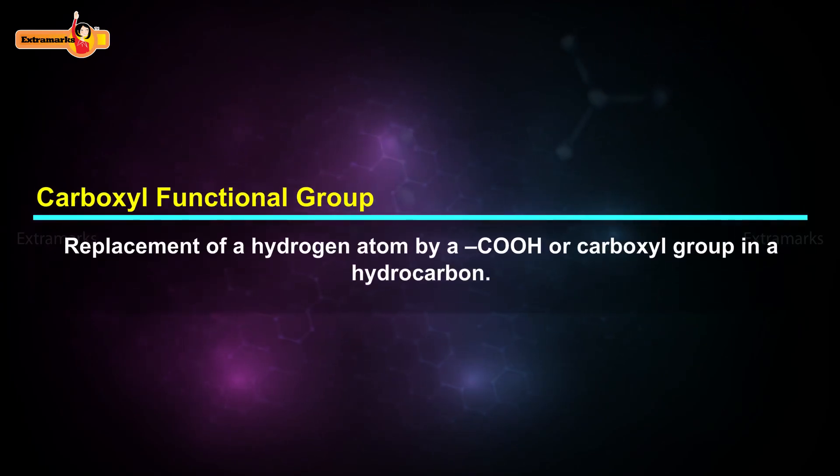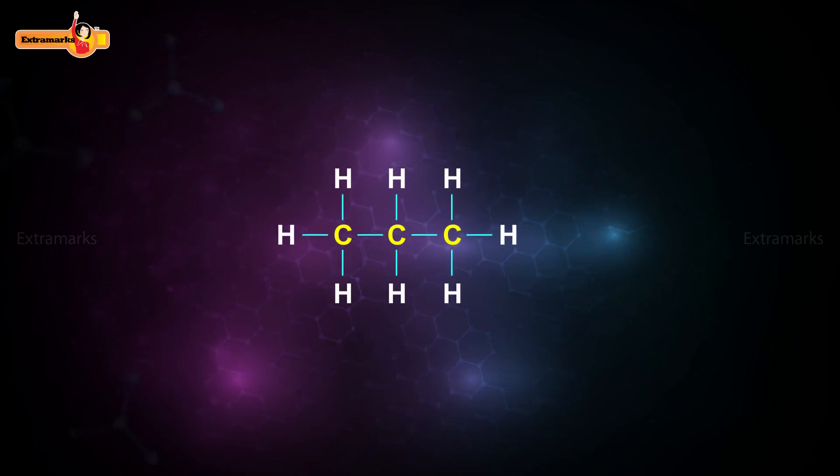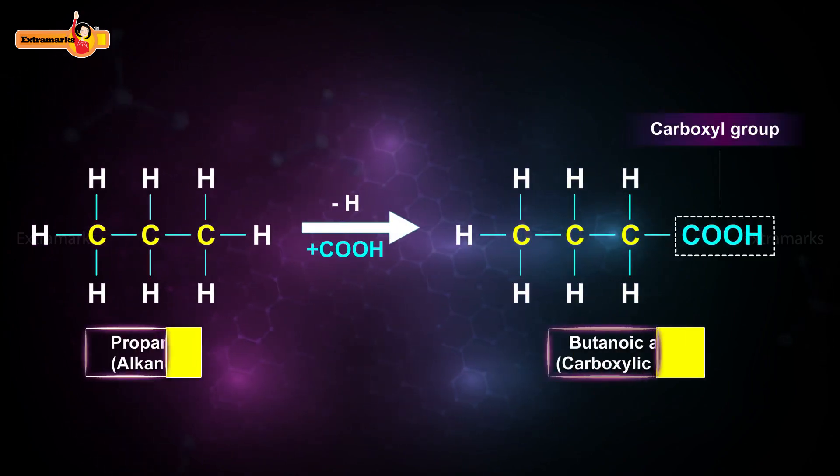Now we will learn about another class of organic compounds which has carboxyl functional group. These compounds are formed by the replacement of a hydrogen atom by a COOH or carboxyl group in a hydrocarbon. For example, if we replace one of the hydrogen atoms of propane by carboxyl group, butanoic acid is formed.